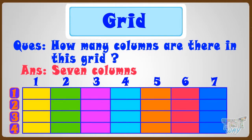Let's name the columns A, B, C, D, E, F, G. We have named the rows with numbers, and we have named the columns with alphabets.